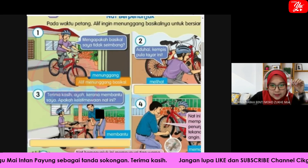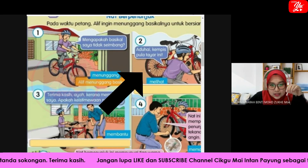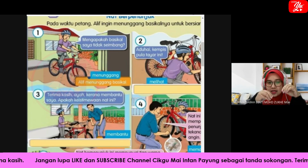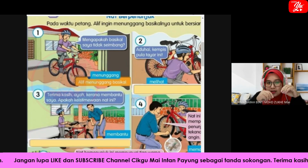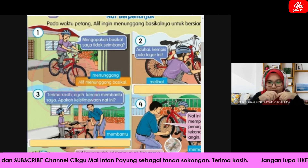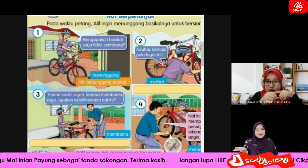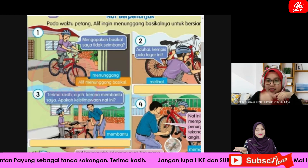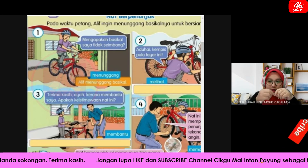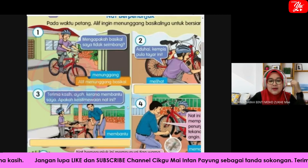Kita pasang dekat tempat masuk angin ni, dekat bahagian yang cikgu bulatkan. Kita pasang dekat situ, baru kita tutup penutupnya. Kamu nak masukkan angin dalam basikal kan ada penutup yang kena pusing. Sebelum masuk penutup tu, kita akan letak nut berpenunjuk dekat situ, barulah kita tutupkan lubang angin tu.